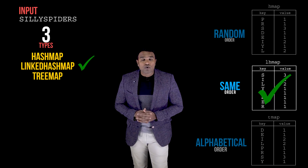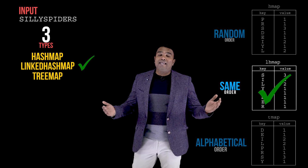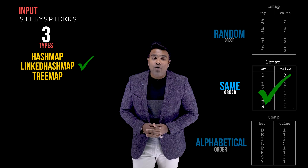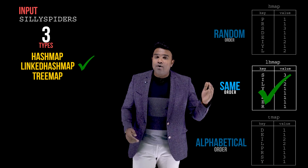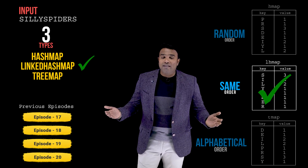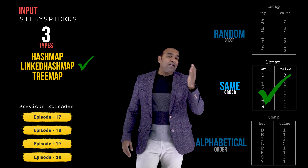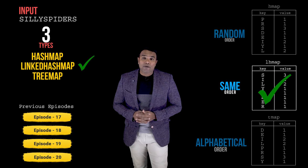For those who do not understand maps and the different types of maps, note that this is not an independent episode. I would insist all such viewers to go back and watch episodes 17, 18, 19, and 20 before continuing. For those who have watched those episodes, let's proceed. My input string is 'silly spiders', and when I give it as input to this program, this is the output I am supposed to get.